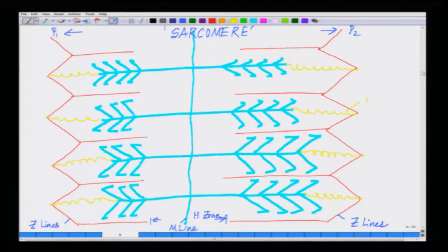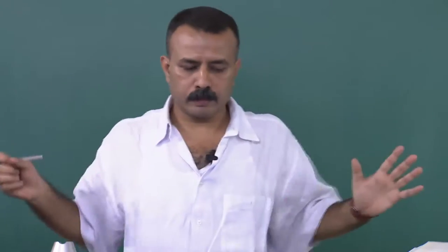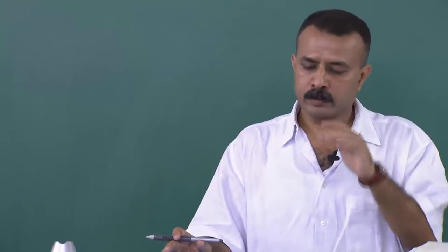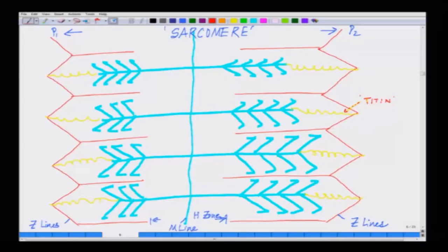There are certain connecting structures here — specific proteins which are spring-like in their connectivity. These are called titin. They are a coiling kind of protein, like a spring which pulls something. This is the basic architecture of a cross-section of a muscle. Now we will go into some more finer details.